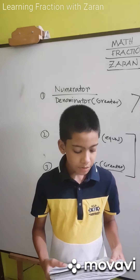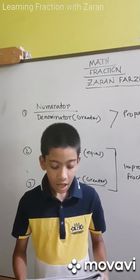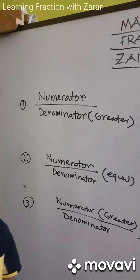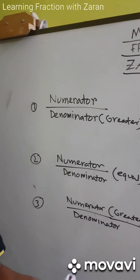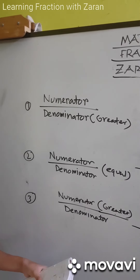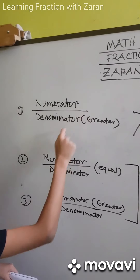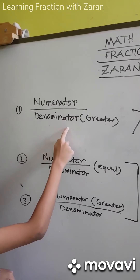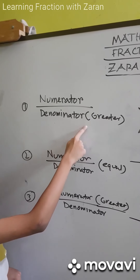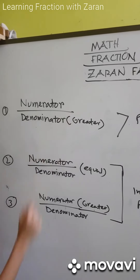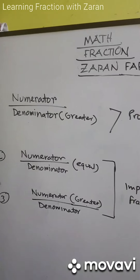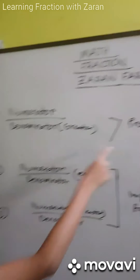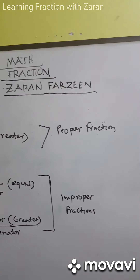There are 3 types of fractions. If a fraction is smaller than 1, it is a proper fraction. In this case, the numerator is smaller than the denominator, which means the denominator is greater than the numerator. If the denominator is greater than the numerator, it is called a proper fraction.